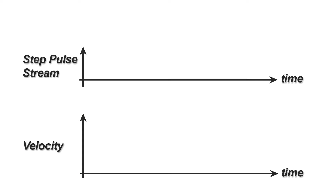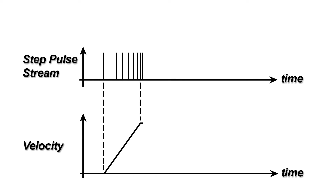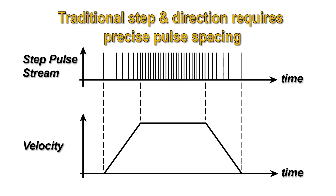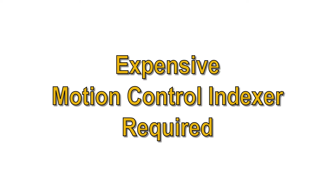In a traditional step and direction system, the spacing of the step pulses directly relates to the commanded speed and acceleration. The pulse frequency has to be precisely ramped up and down, and the spacing between pulses has to be very accurate. This precision has to be maintained for all move lengths, speeds, and accelerations in order to have quality motion. This level of finesse means you need a relatively expensive motion control indexer to make the step pulse train.